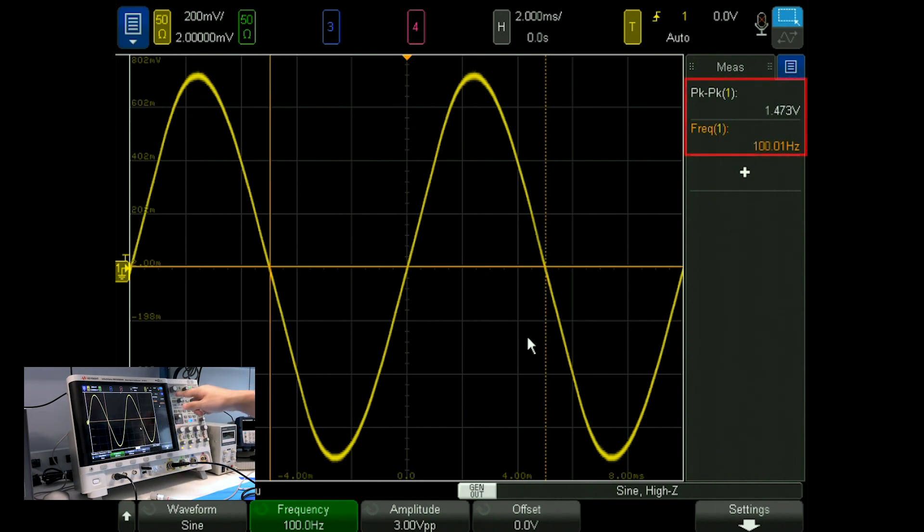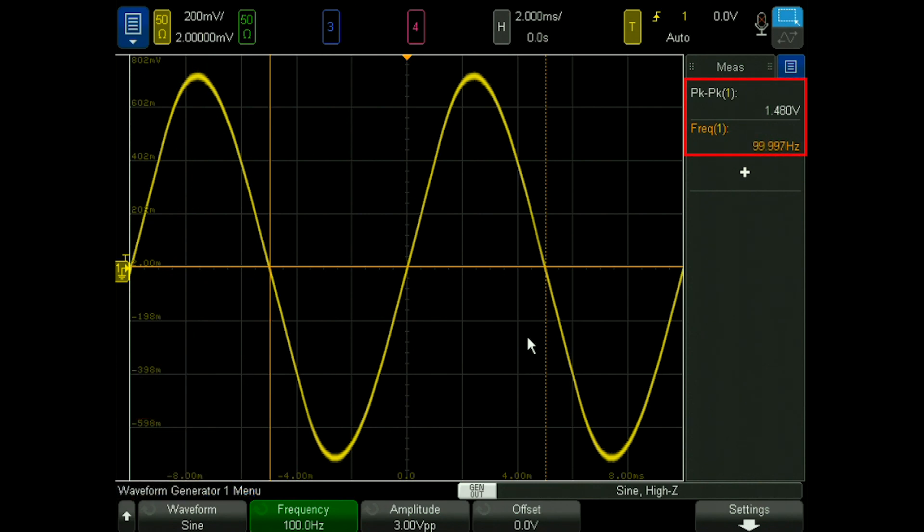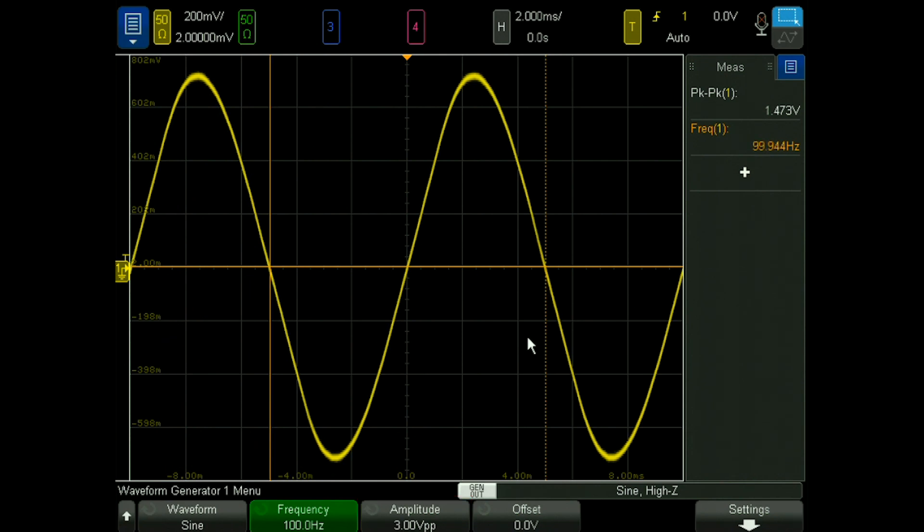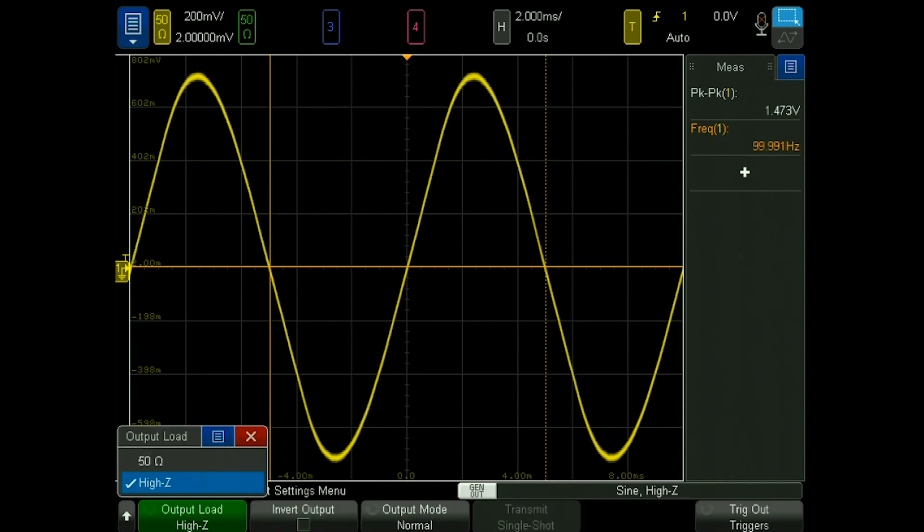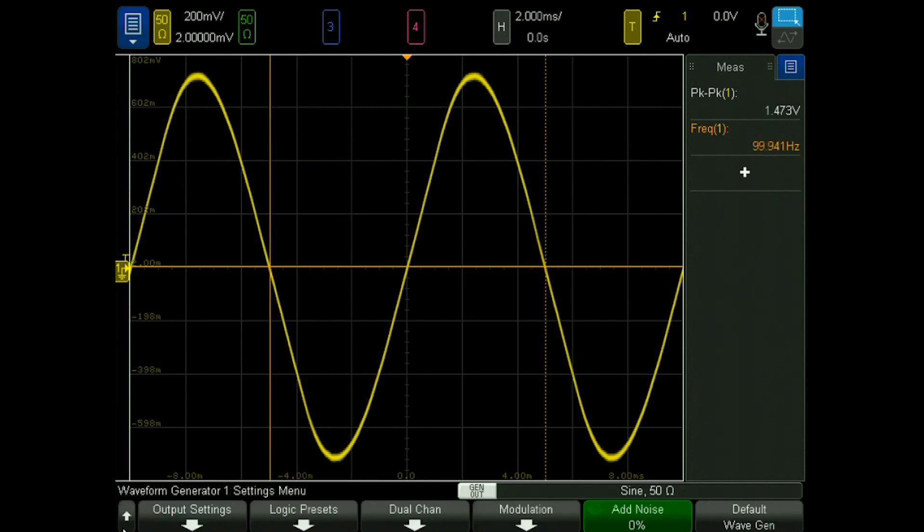We can see that our peak-to-peak measurement is 1.48 volts approximately, but that doesn't match the amplitude peak-to-peak that we're expecting from our waveform generator, and that's because our generator is expecting our load to be a high impedance. So we'll have to change this to 50 ohms also. Now we can see that they match.